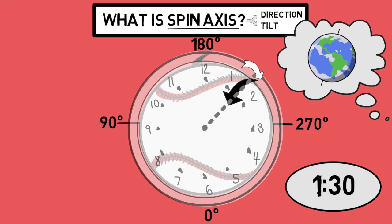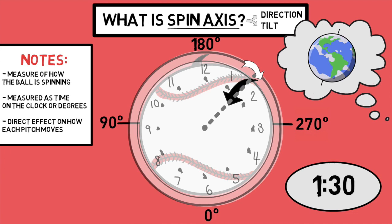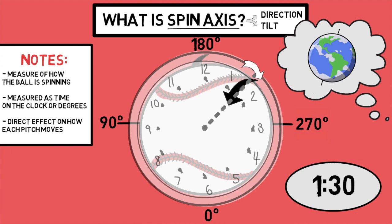That should be a review for most of you who have been around this channel for a while, but if you're just starting to dig into this stuff, I'll have video links to past videos where we dive deeper into spin direction in the description down below. Reviewing the important info here, spin axis is the measure of how the ball is spinning, measured as time on the clock or in degrees depending on what system you're looking at. But the main reason spin axis or spin direction is important is because of its effect on pitch movement.